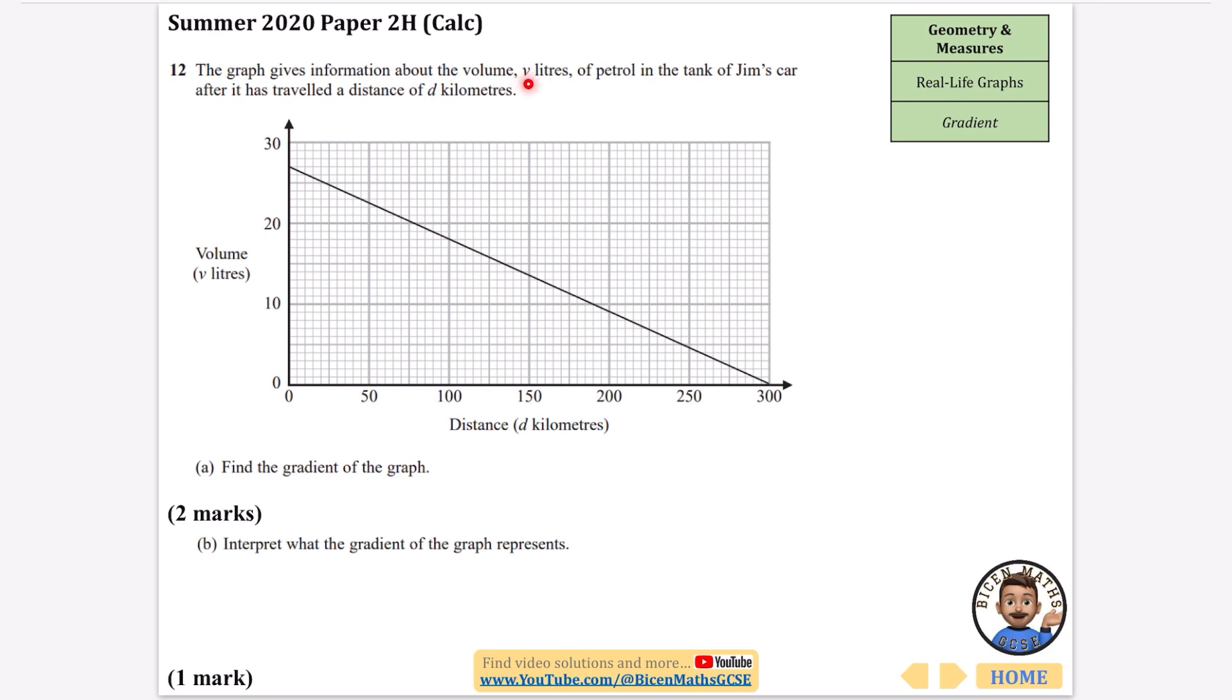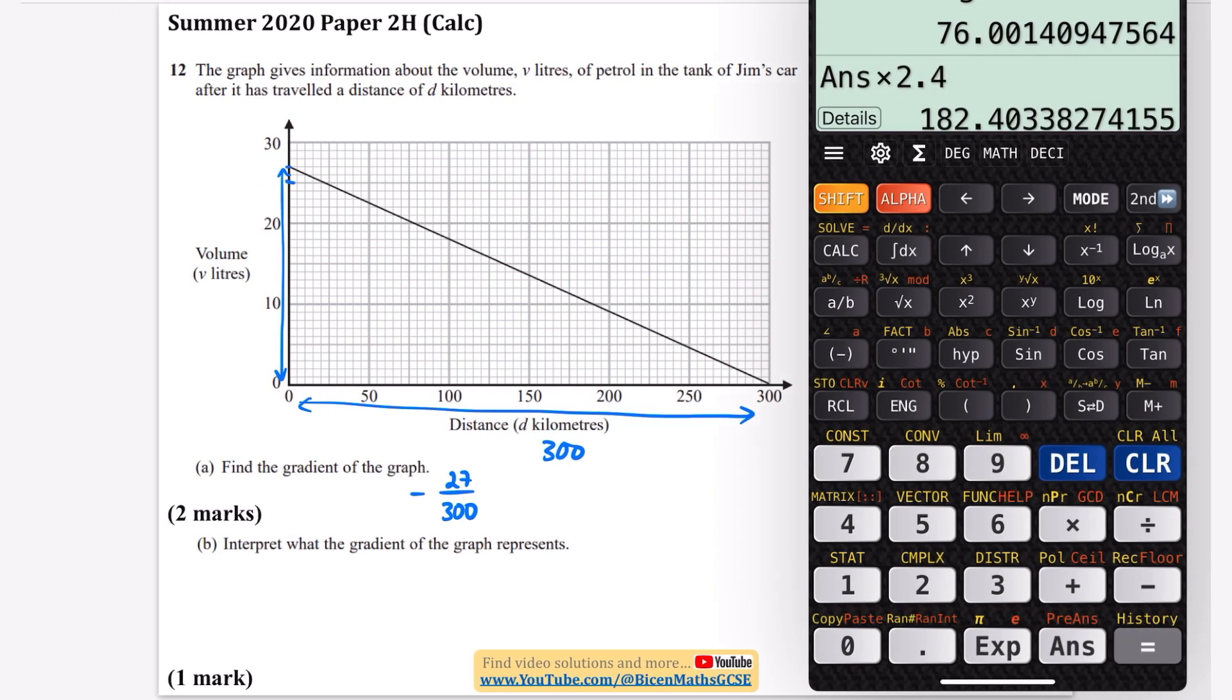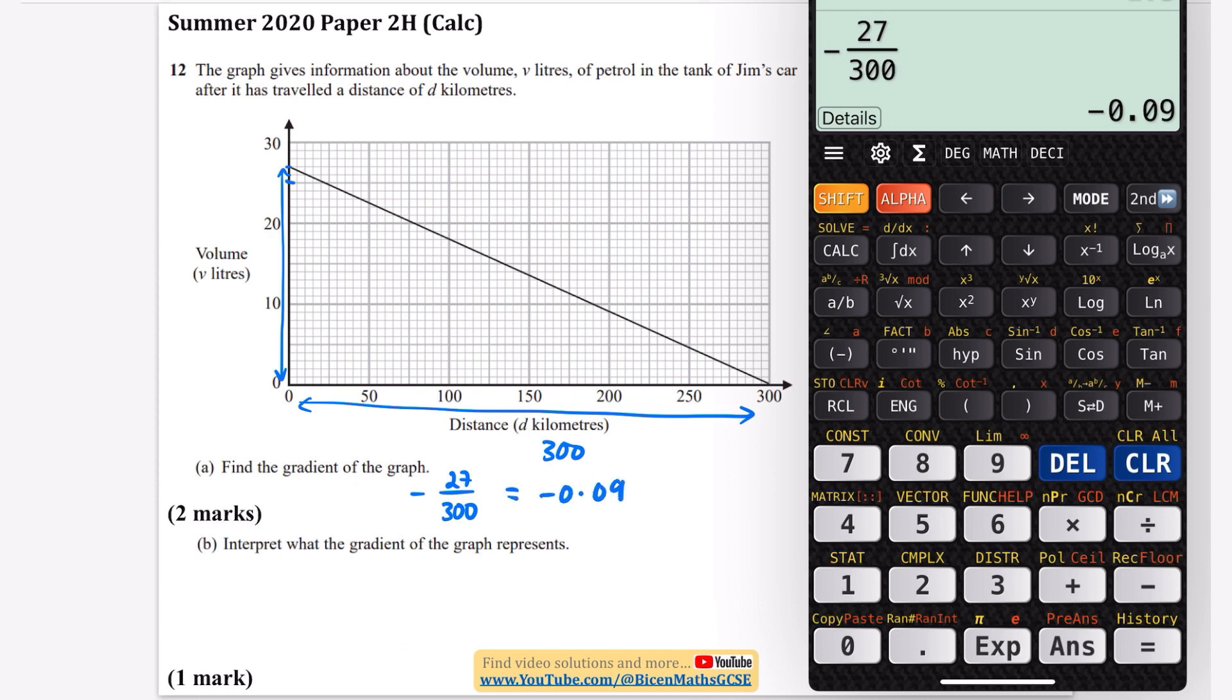This graph gives information about the volume v liters of petrol in the tank of Jim's car after it has traveled a distance of d kilometers. Find the gradient. I'm going to find out how much it's changed on this side divided by how much it's changed on the bottom. The bottom is clearly 300. The side part is 27. The gradient is 27 divided by 300, but remember it is negative because it is sloping downwards. So negative 27 over 300, and we get minus 0.09.